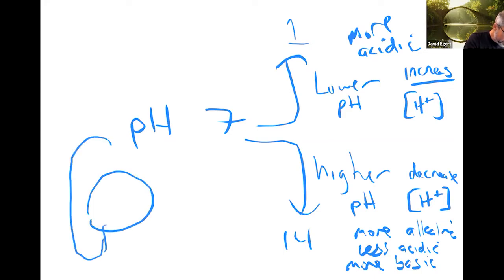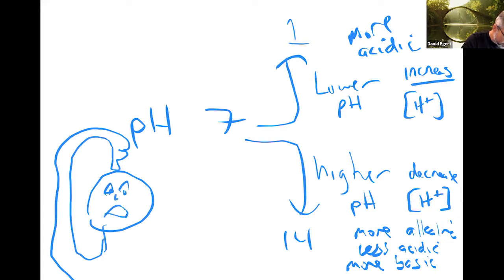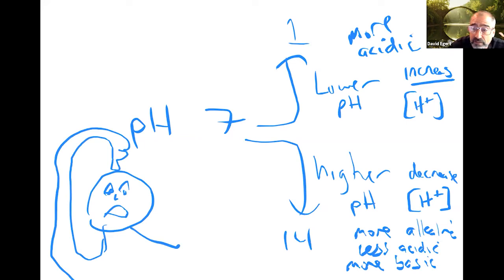Just keep this straight — it's easy to get confused. pH goes down, H+ goes up. pH goes up, H+ goes down. More acidic means a lower pH number. Spend a little time making sure it's clear, because you don't want to lose exam points being flustered by this. It's important to have a good intuition for what pH is and what it means.